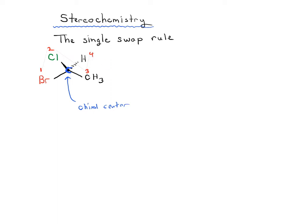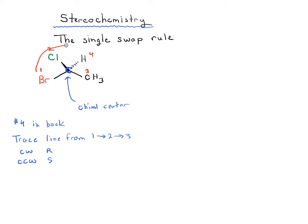That allows us fairly easily to rank the different priorities: bromine is 1, chlorine is 2, carbon is 3, and hydrogen is 4. For R and S, if we put number 4 in the back and then trace a line from 1 to 2 to 3, if it's clockwise it gives us R, and if it's counterclockwise it's S. In this case going from bromine to chlorine to carbon — that's clockwise — so this is R.